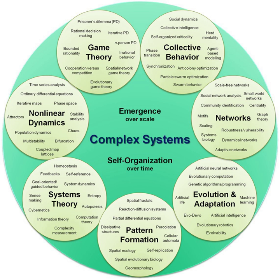A complex system is a system composed of many components which may interact with each other. Examples of complex systems are Earth's global climate, organisms, the human brain, infrastructure such as power grids, transportation or communication systems, social and economic organizations like cities, an ecosystem, a living cell, and ultimately the entire universe.